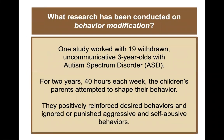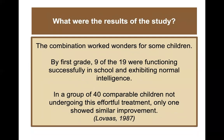Research on behavior modification includes a study with 19 withdrawn, uncommunicative three-year-olds with autism spectrum disorder. For two years, 40 hours each week, the children's parents attempted to shape their behavior — positively reinforcing desired behaviors and ignoring or punishing aggressive and self-abusive behaviors. The results showed the combination worked wonders for some children. By first grade, nine of the 19 were functioning successfully in school and exhibiting normal intelligence. In a group of 40 comparable children not undergoing this effortful treatment, only one showed similar improvement.